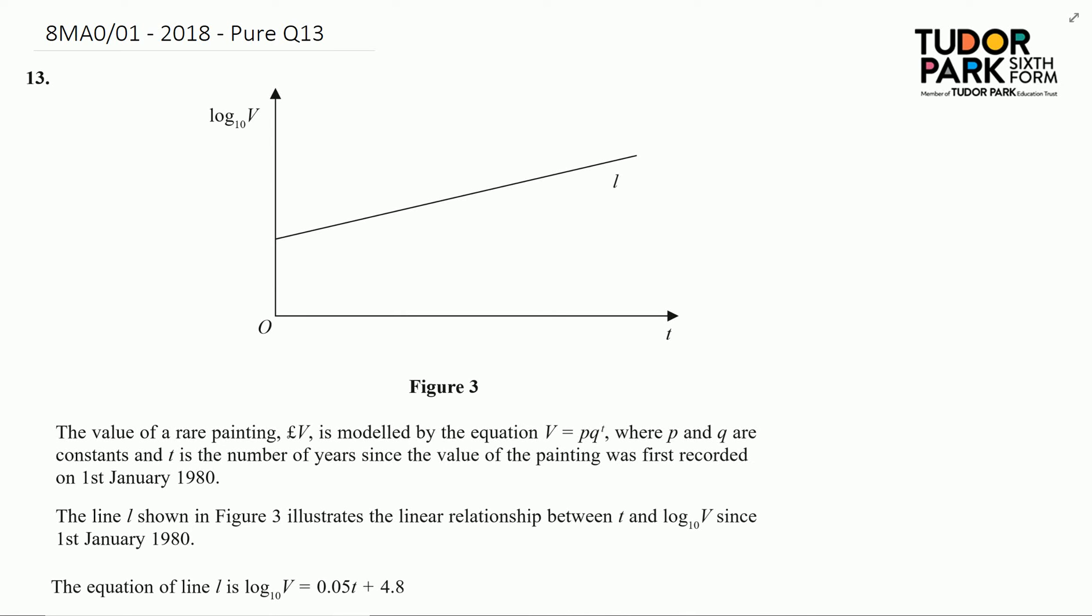Question 13 is getting us to consider some logarithms. We've got a model here for the value of a rare painting, and it's given to us as V equals pq to the power of t. We've got some information further down about the line being given to us as log V equals 0.5t plus 4.8.